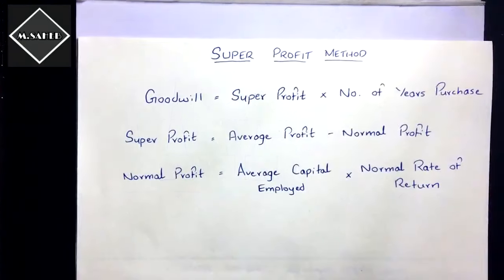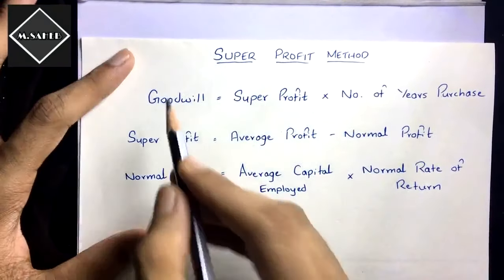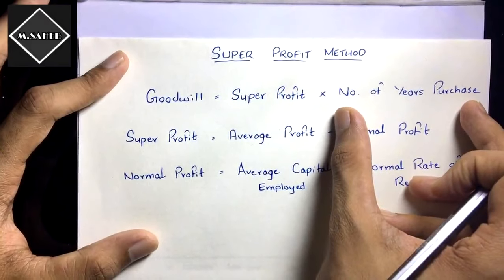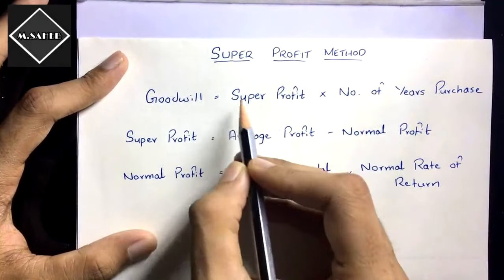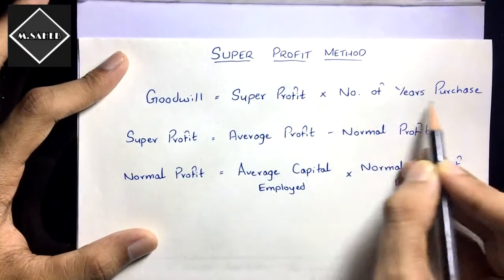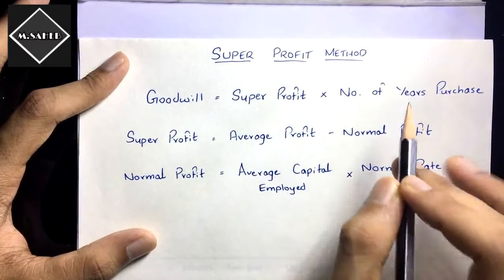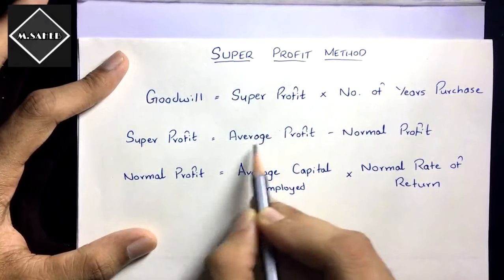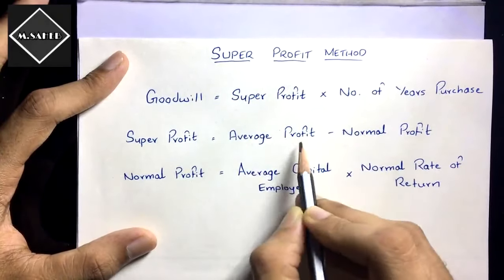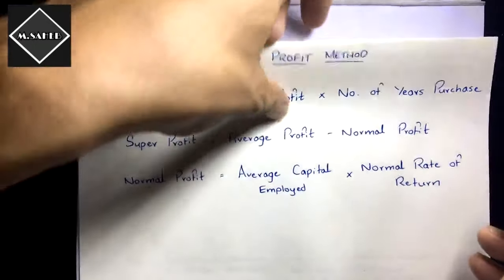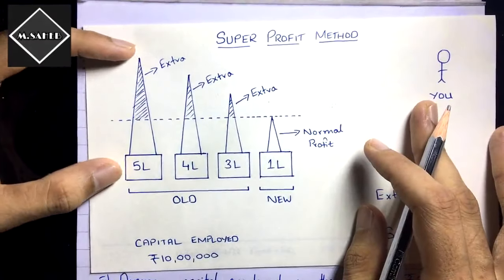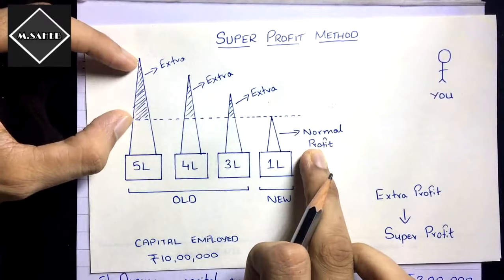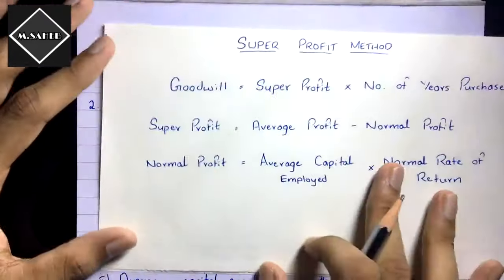Now let's see the formulas of the super profit method. First: Goodwill = Super Profit × Number of Years Purchase. Number of years purchase is given in the question. Second: Super Profit = Average Profit of past years − Normal Profit. Average profit is the total past profit; subtracting normal profit gives you the super profit.